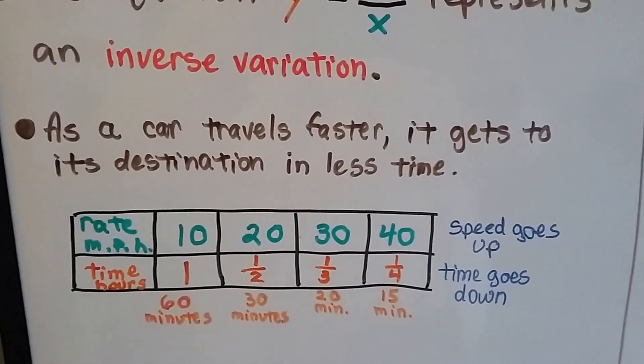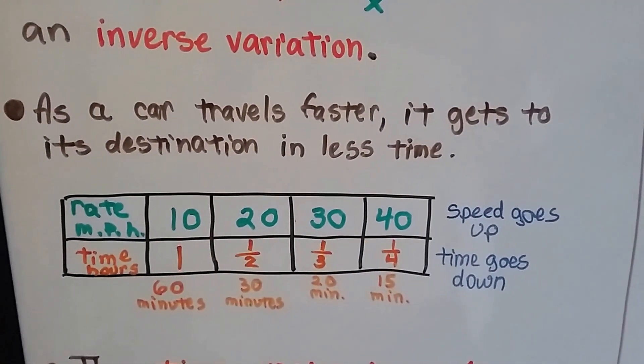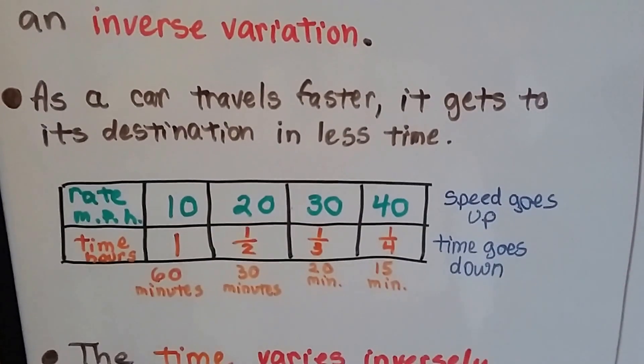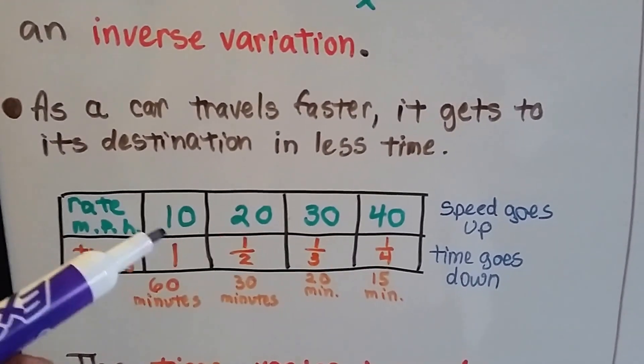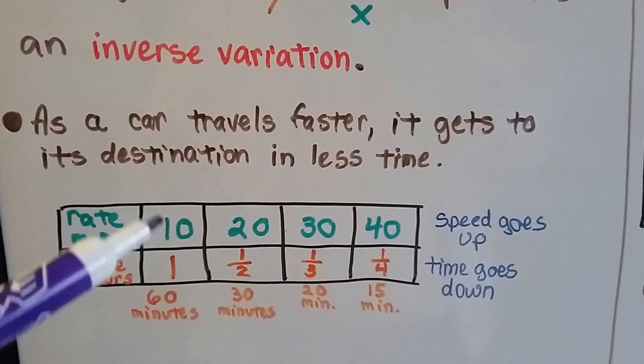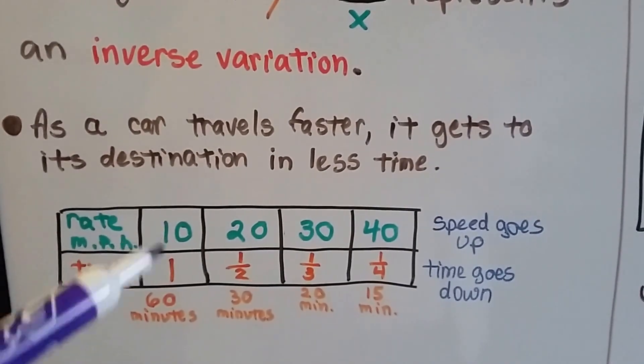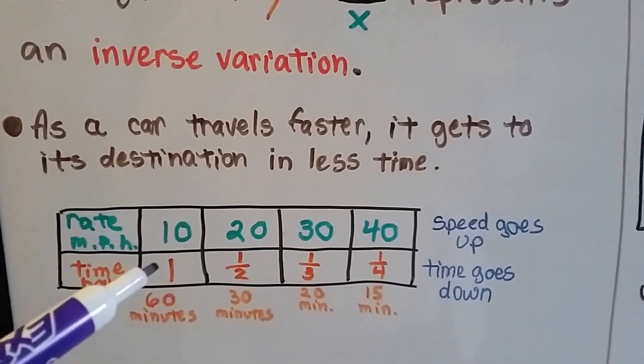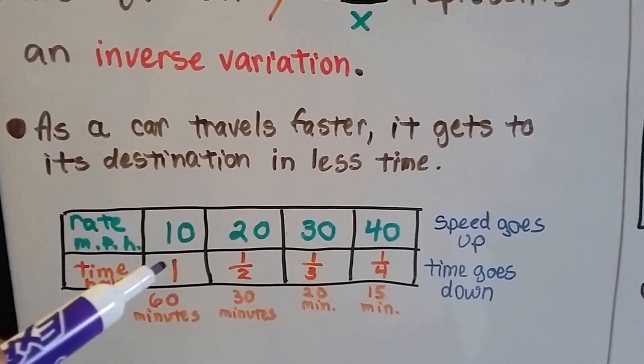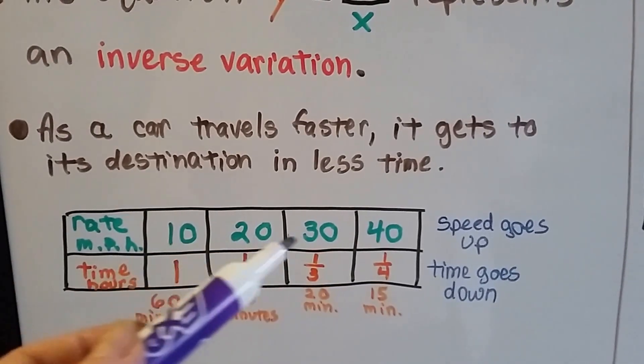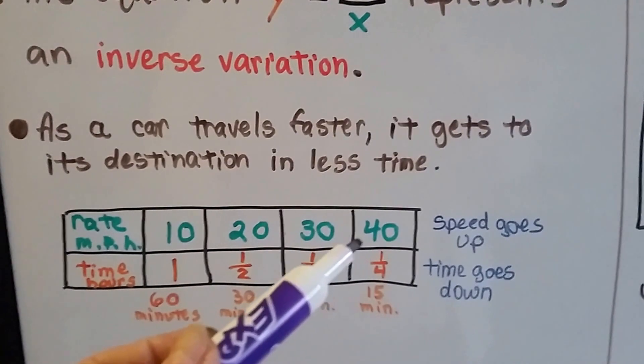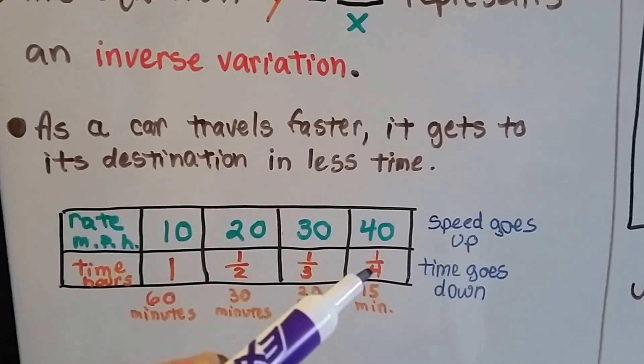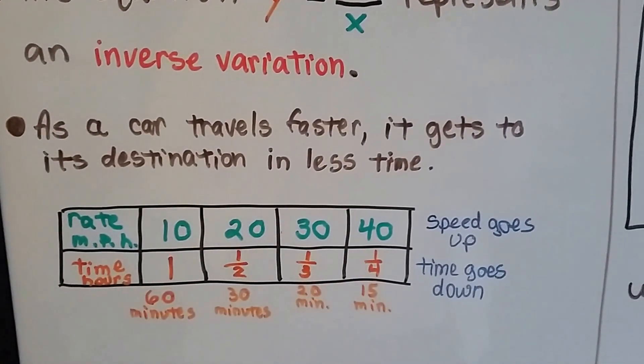As a car travels faster, it gets to its destination in less time. So if we needed to go 10 miles to get to the mall, and we travel at 10 miles an hour, it's going to take us an entire hour. As we increase the speed of the car, we're going to get there in less time. If we go 40 miles an hour, it's only going to take us one-fourth of an hour.